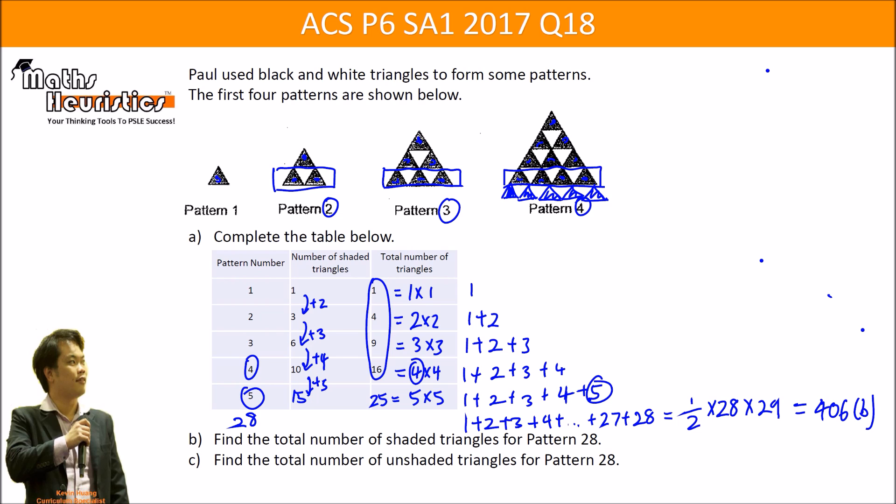Then part C, we are supposed to find the total number of unshaded triangles for pattern 28. To do this we can simply find out the total number of triangles first which should be 28 times 28, so that will give you 784. Then we can observe also that the number of unshaded triangles should be equal to the total amount minus the number of shaded triangles. So this would be 784 minus 406 to give you 378. And this answers part C.